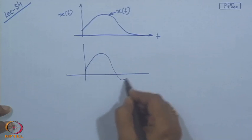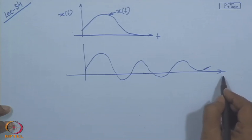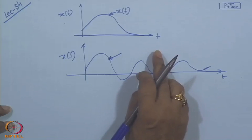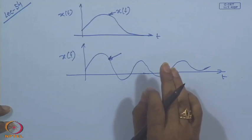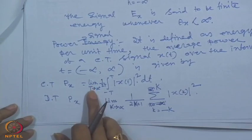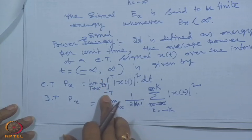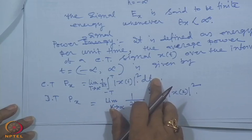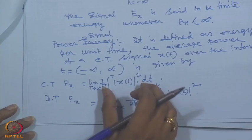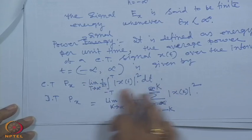Suppose the signal x does not tend to 0 - something like this x of t which does not tend to 0 as t tends to infinity. Then we cannot give the size of the signal by an energy signal. So we have to define what is called a power signal. And power signal - we defined how to find out the signal size in power signal form: limit t tends to infinity, 1 by 2T, integral from minus T to plus T of |x(t)|² dt. This is nothing but average power - that expression we have seen.